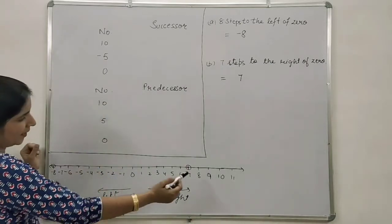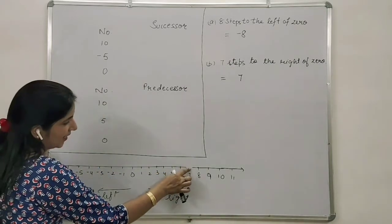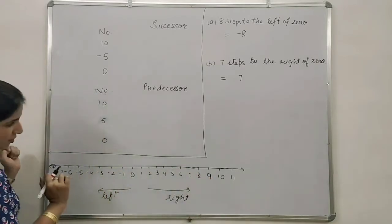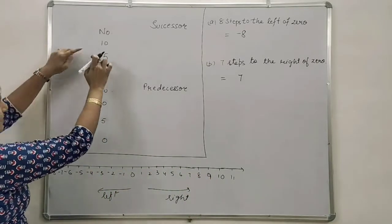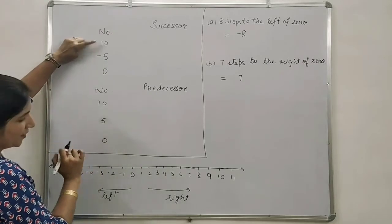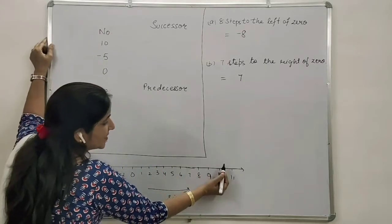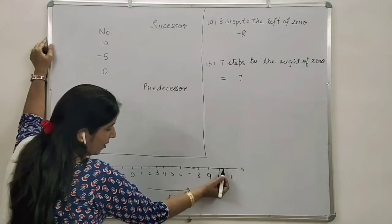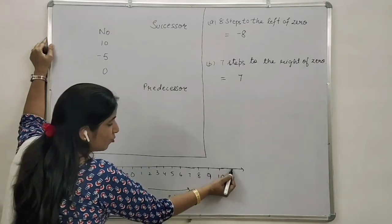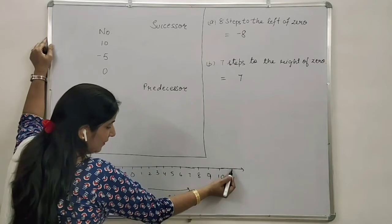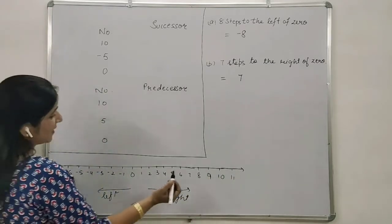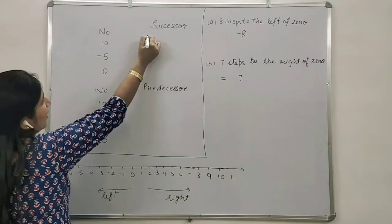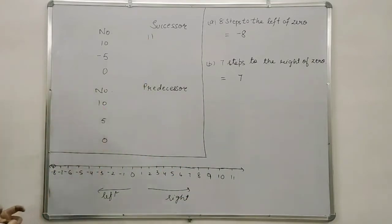On the number line, positive numbers are when we move towards the right. So, let us discuss successor. What is the successor of 10? The next positive number which is 1 greater than that — adding 1. So, on the number line, when we move one step right, it becomes its successor. So, what is that? 11. So, 11 is the successor of 10.